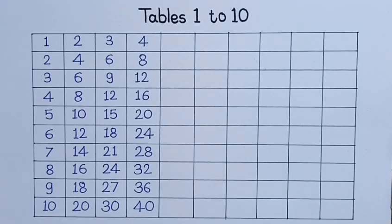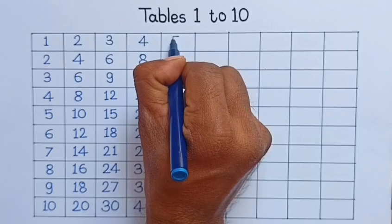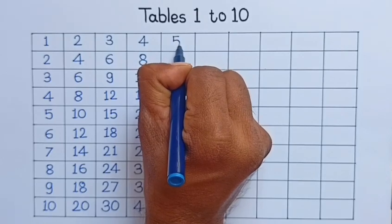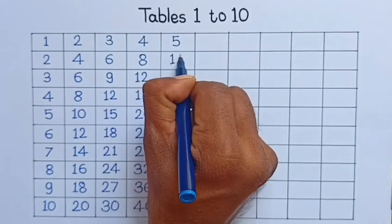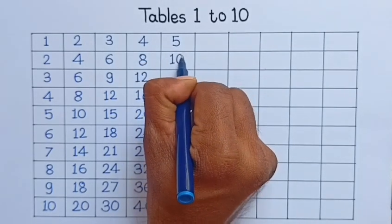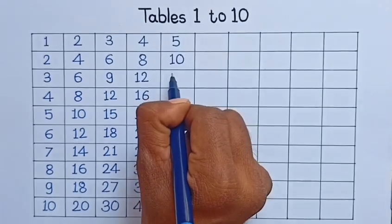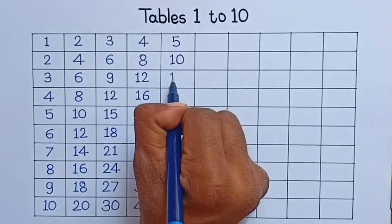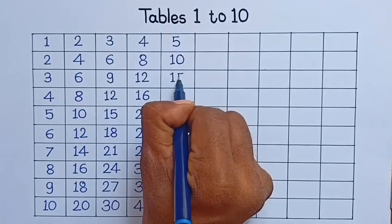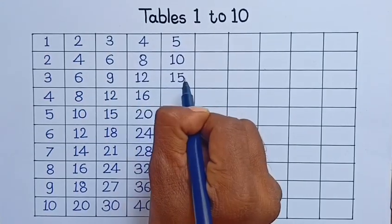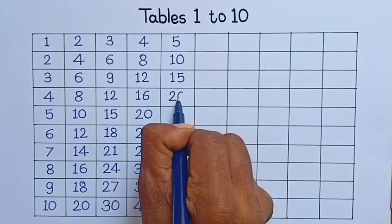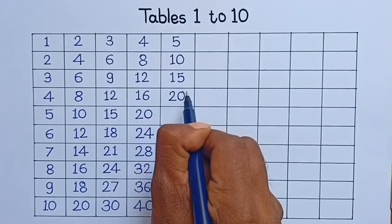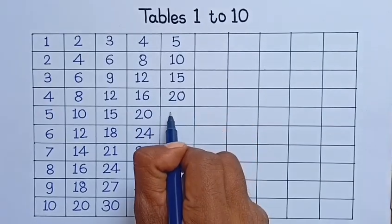5, 1 the 5. 5, 2 the 10. 5, 3 the 15. 5, 4 the 20. 5, 5 the 25.